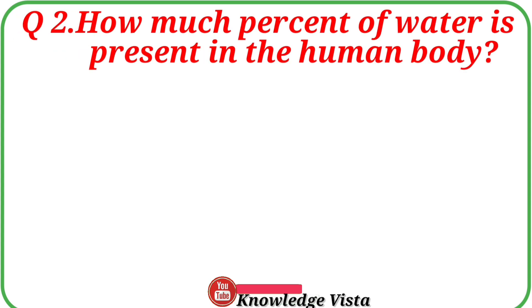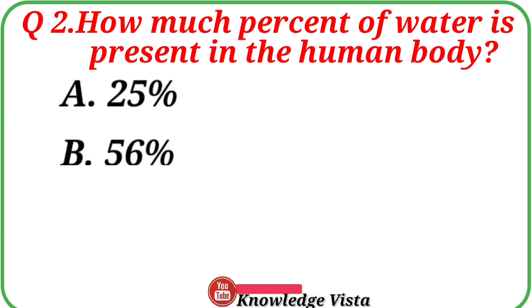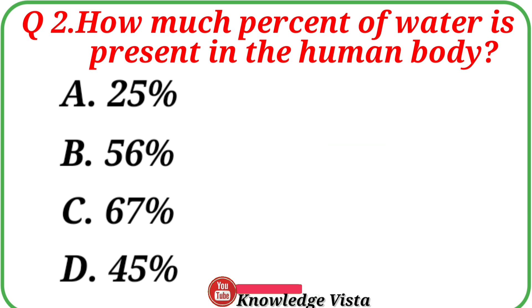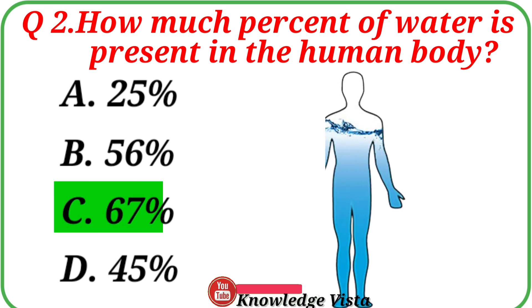Question number 2: How much percent of water is present in the human body? Your options are: A. 25%, B. 56%, C. 67%, D. 45%. Correct answer is option C, 67%. 67% of water is present in the human body.